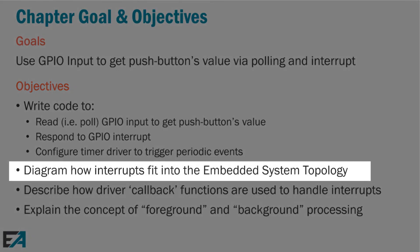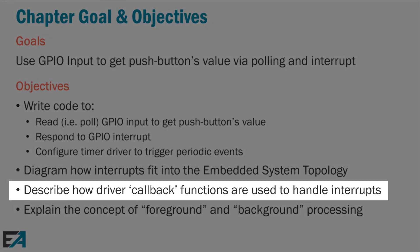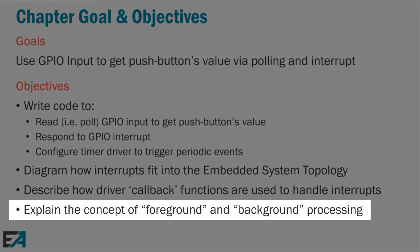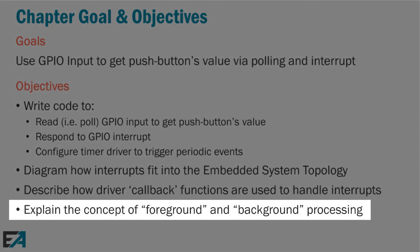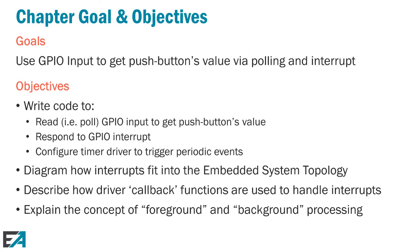Other goals include diagramming how an interrupt fits into an embedded system — we have one big diagram that shows all of that. We'll also talk about what callbacks are, and finally explain the concepts of foreground and background processing. These concepts get more complex in RTOS where you can have all kinds of different priority levels, but here we'll keep it to simple foreground and background processing.